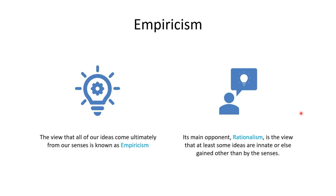Empiricism holds that all of our ideas ultimately come from our senses. Rationalism comes in many forms — in order to not be an empiricist, all you have to do is say that at least some ideas come from somewhere else. Rationalists don't deny that many ideas come from experience; they simply say that at least some are perhaps innate — that we're born with them — or gained by pure thought or reason rather than by the senses. Hence the term 'rationalism.'